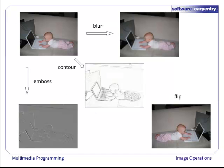Here are the results: a blurred image, one that has high contrast contour lines enhanced, one that appears embossed, and the left-to-right inverse of the original. No matter which way you look at her, she's a cute kid.